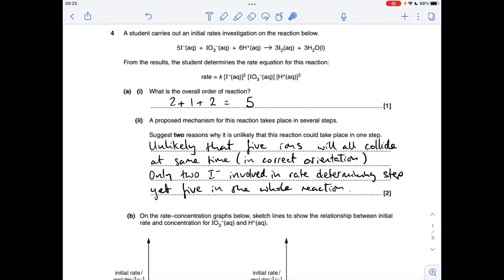The other reason is if you look again at the rate equation, we'll just use the I minus ion to illustrate this, but you could have talked about the H plus ions. The rate determinant step only involves 2 I minus ions, whereas in the overall equation, there are 5. So there must be other iodide ions involved in other steps. You could have said exactly the same reason for the H plus ions. There's 2 involved in the rate determinant step, but there's 6 in the overall equation.